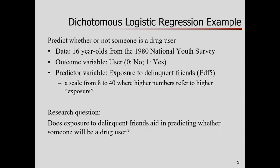The data I have are 16-year-olds from the 1980 National Youth Survey. I have an outcome variable: is this person a drug user or not? Yes or no — a dichotomous variable with two categories. And I have a predictor: exposure to delinquent friends. This is a scale that ranges from 8 to 40, where a higher number means higher exposure to delinquent friends.